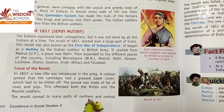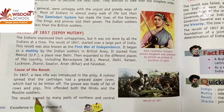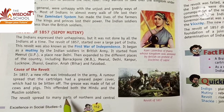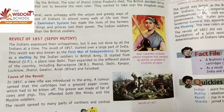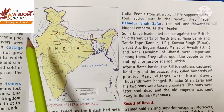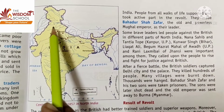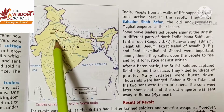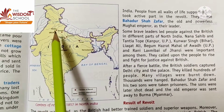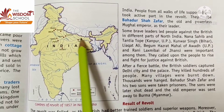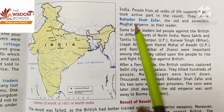The revolt spread to many parts of northern and central India, including Meerut, Bareilly, and Delhi in the north, and Gwalior and Jhansi in central India.